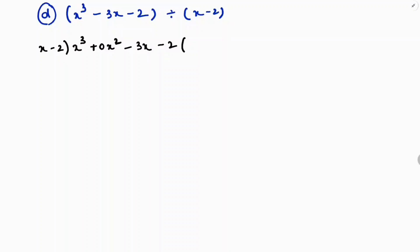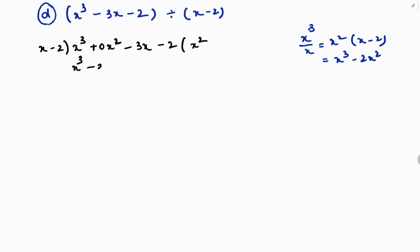The first term of the dividend is x cube and the first term of the divisor is x. So x cube divided by x is x square. Now multiply x square with the divisor x minus 2: x square into x is x cube, x square into 2 is minus 2x square, giving x cube minus 2x square. Subtracting, the minus becomes plus, so x cube minus x cube cancels to 0, and plus 2x square remains.